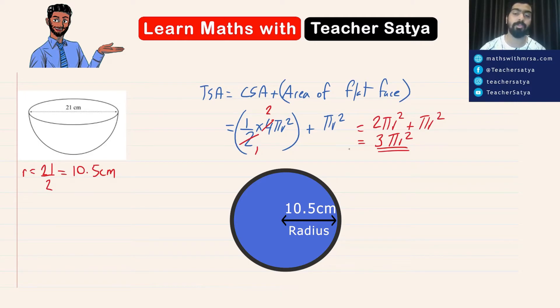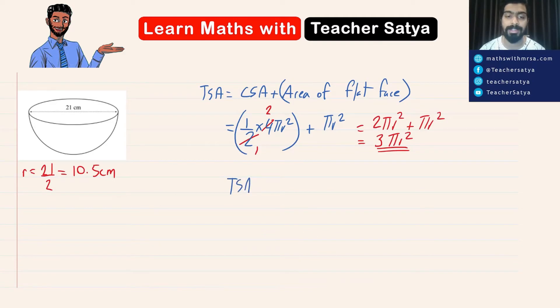Now let us take this value and plot it in the formula that we have. So TSA is 3 pi r squared, which is 3 multiplied by pi multiplied by 10.5 to the power of 2. Right guys?